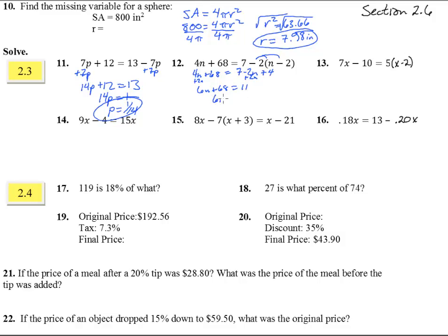So we get 6n plus 68 equals 7 plus 4 is 11. Subtract 68 and we get 6n equals negative 57. Divide both sides by 6 and we get n equals negative 57 over 6. I think this reduces down to negative 19 halves. Or if you were to do the decimal, negative 9.5 would have been just fine.